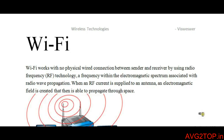Wi-Fi is a wireless technology where there is no physical wire between the sender and the receiver. It uses radio frequency — the RF technology — which operates within the electromagnetic spectrum associated with radio wave propagation.